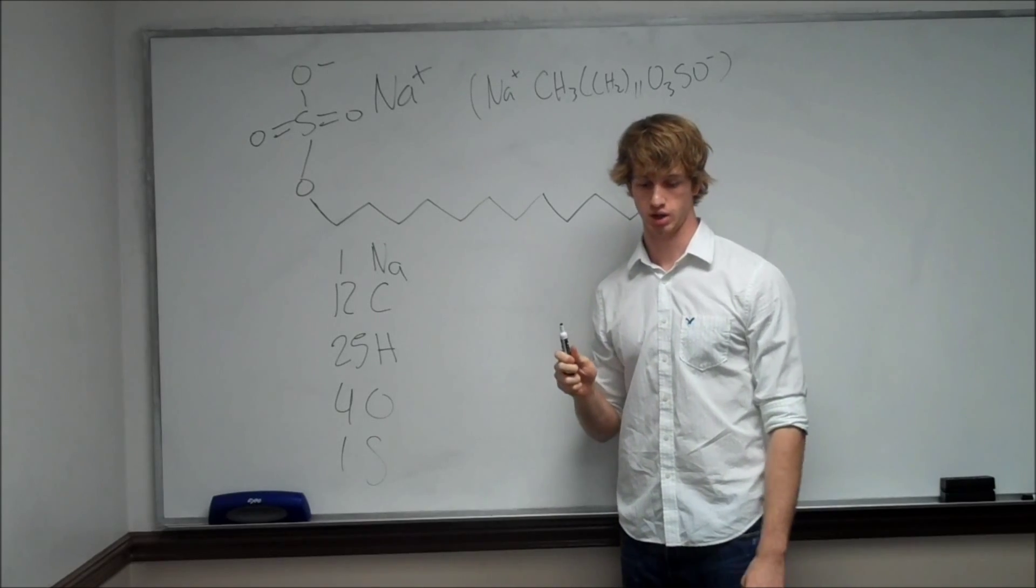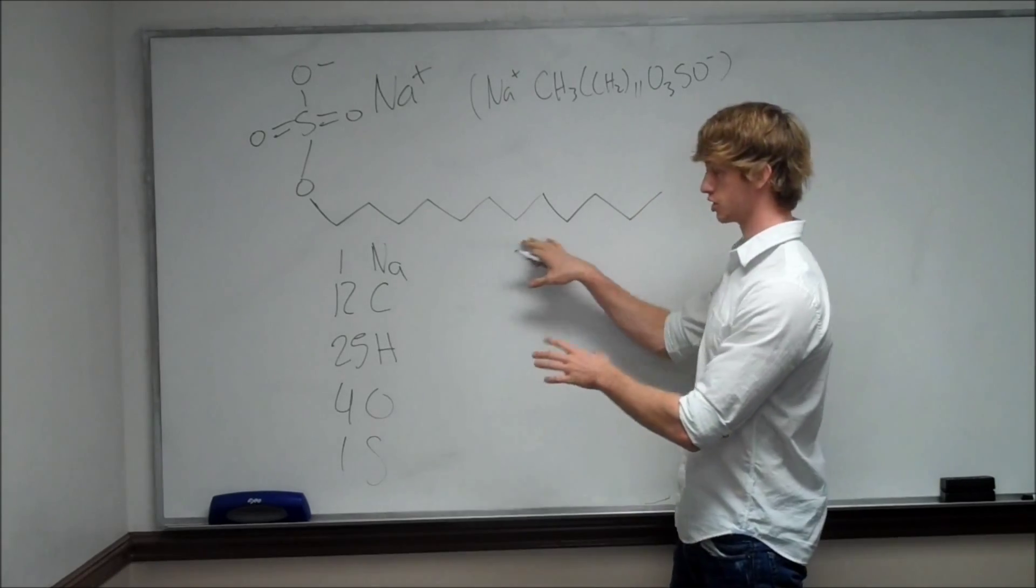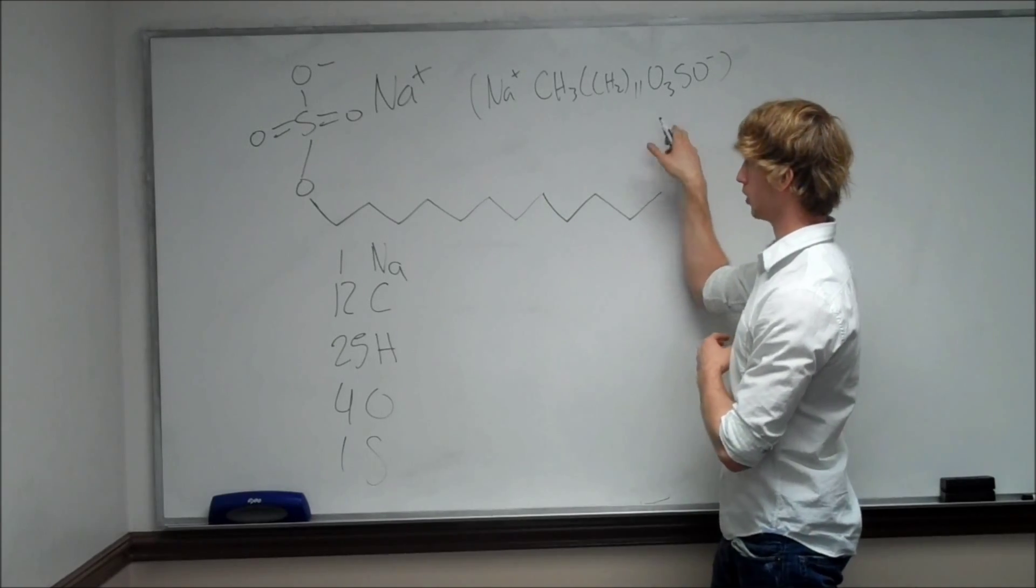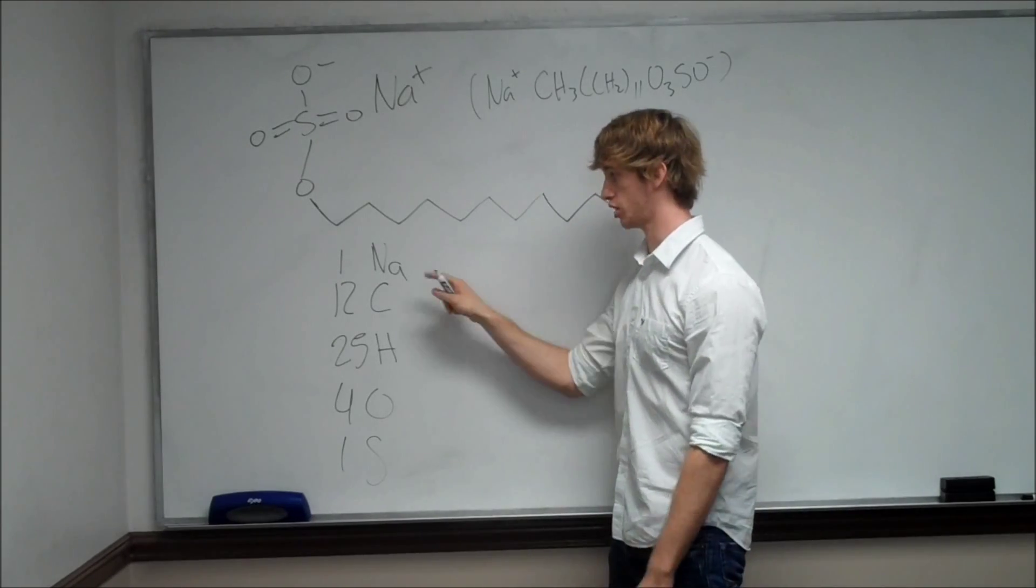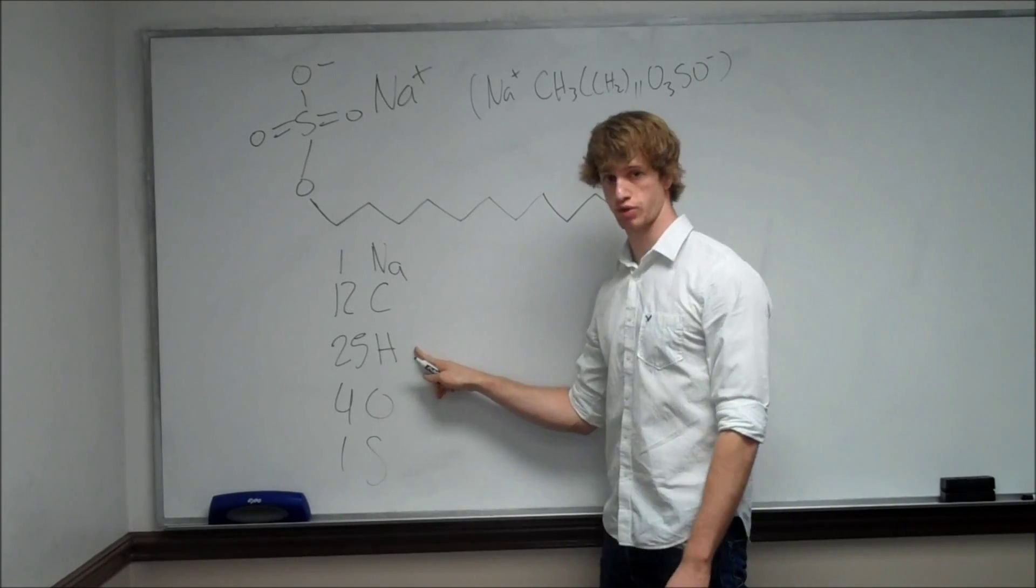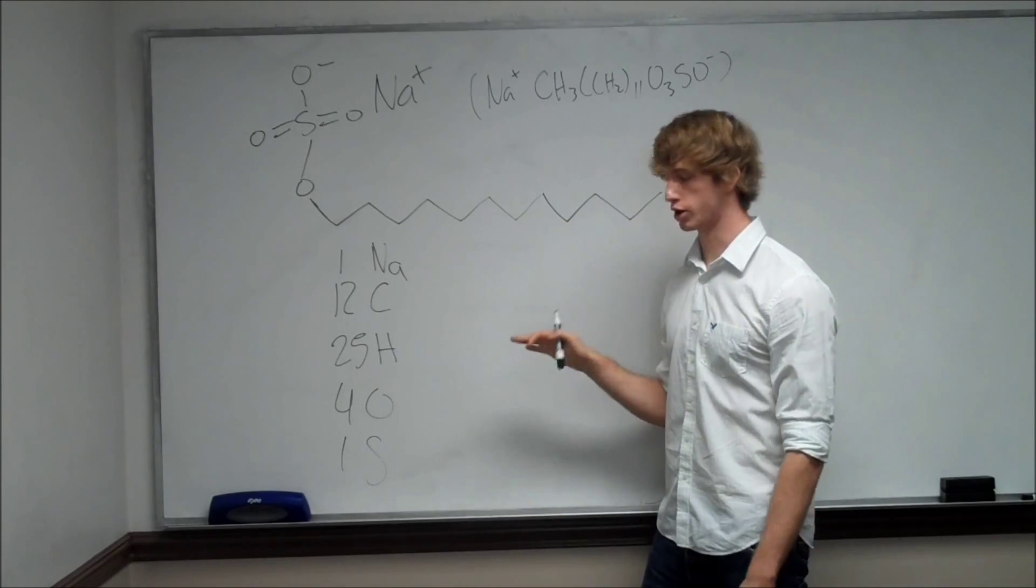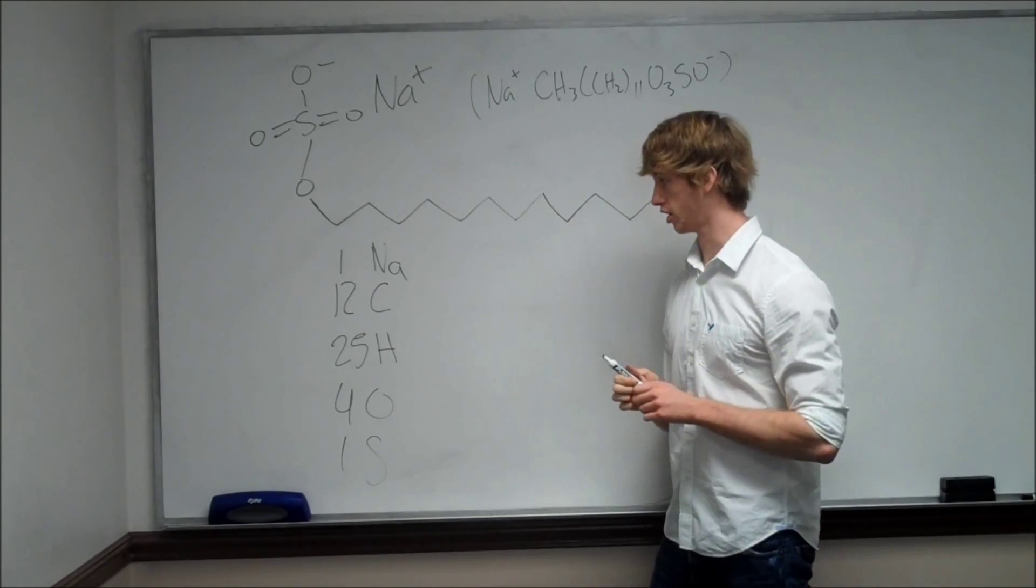The first thing we need to do is we don't know how much this weighs. So we take the molecular formula and add up all the constituent atoms. We have one sodium atom, 12 carbons, 25 hydrogens, 4 oxygens, and 1 sulfur. Then we need to go to the periodic table and get their atomic masses.